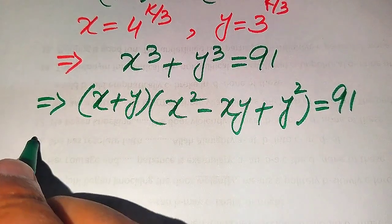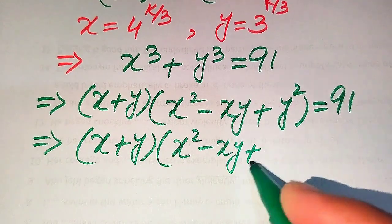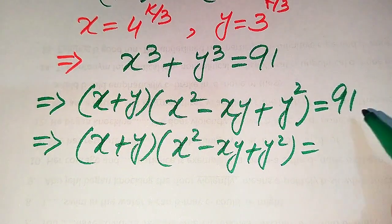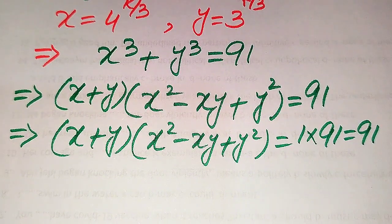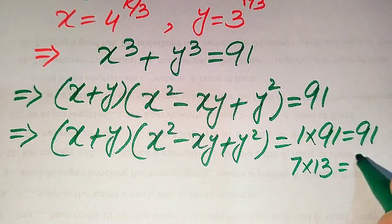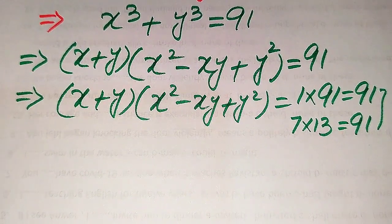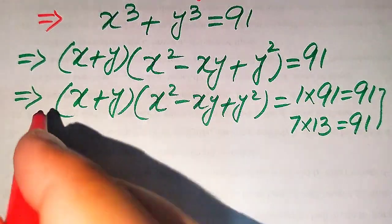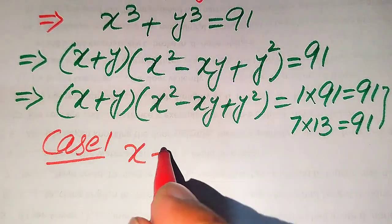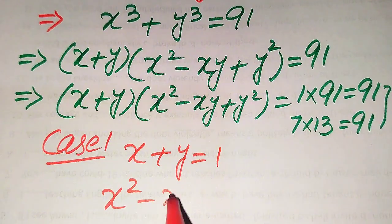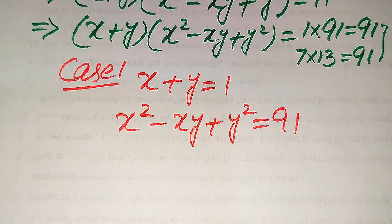On the left-hand side we have two factors multiplied together, but on the right-hand side we have only one number, so we need to factor 91. We write the factors of 91 as 1 × 91 = 91, and 7 × 13 = 91. These give us two possibilities. The first case is: x + y = 1 and x² − xy + y² = 91.